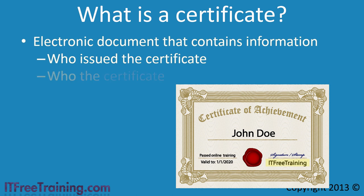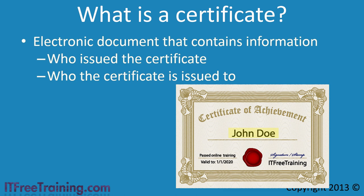The next point of interest is who the certificate was issued to. The certificate shown here was issued to John Doe. Like a physical certificate, an electronic certificate is issued to someone or something — for example, a user, computer, device, or web page. By using this information, the electronic certificate can be checked to see if the user, computer, device, or web page should be using that certificate. Just like a physical certificate, the name on the certificate can be checked to make sure the person using it is the same person. If the name does not match, this means someone is using a certificate they are not supposed to, and the certificate is rejected.